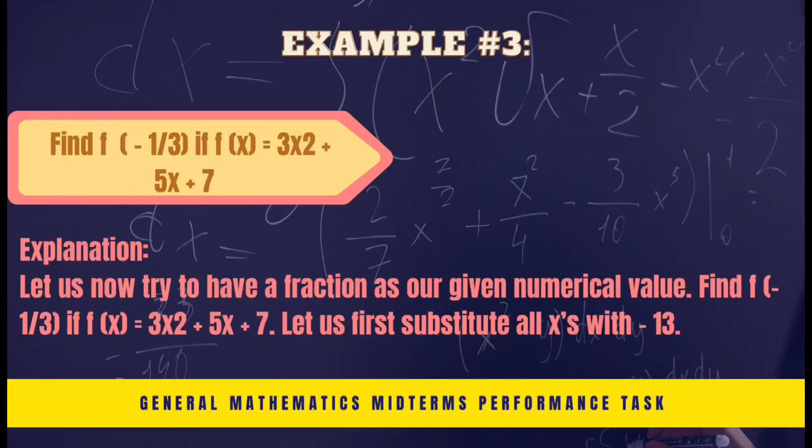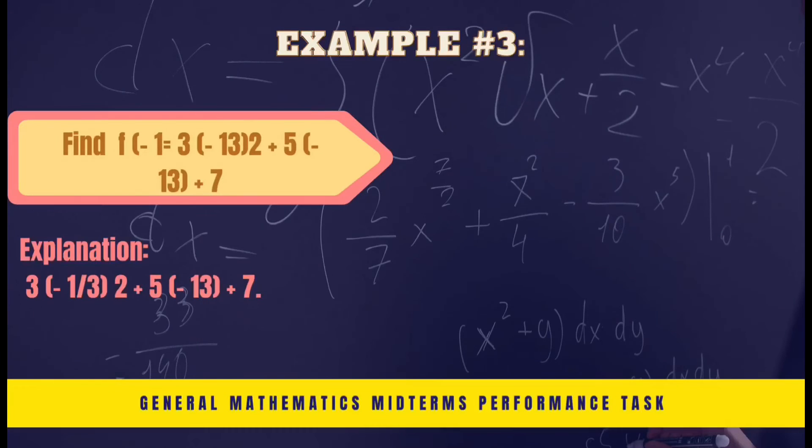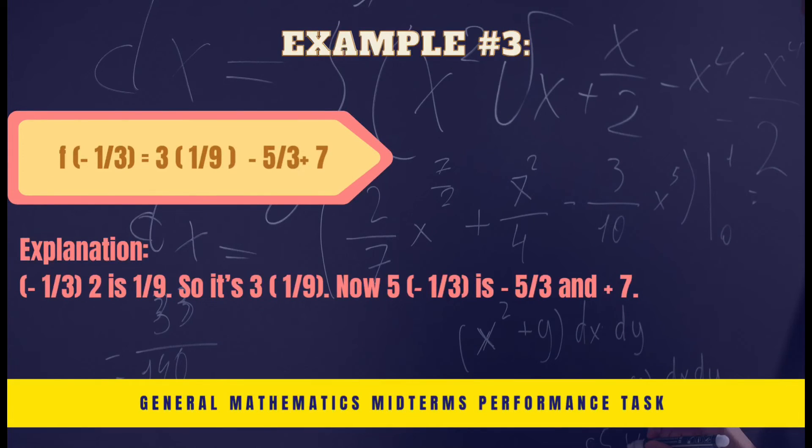Let us now try to have a fraction as our given numerical value. Find f of negative 1/3 if f(x) equals 3x squared plus 5x plus 7. Let us first substitute all x's with negative 1/3. 3 times negative 1/3 squared plus 5 times negative 1/3 plus 7. Negative 1/3 squared is 1/9.